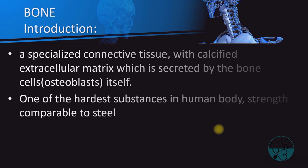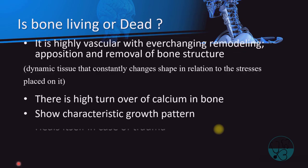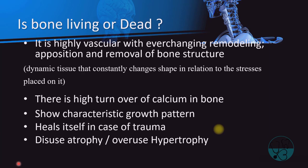Bone is a highly vascular connective tissue with ever-changing remodeling. Remodeling is the process of continuous change, which proves that bone is a dynamic tissue that constantly changes shape in relation to the stresses applied on it. Pressure applied on the bone leads to its resorption, whereas tension applied results in development of new bone, also known as apposition. Bone also exhibits slow characteristic growth and heals itself in case of trauma, and is capable of undergoing atrophy or hypertrophy depending upon the degree of use.